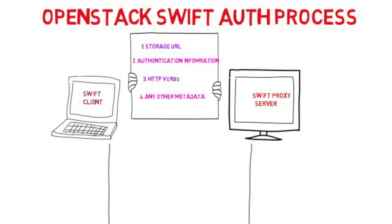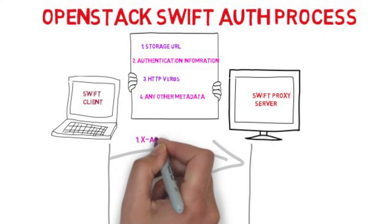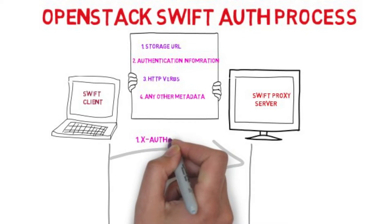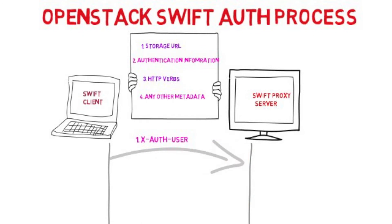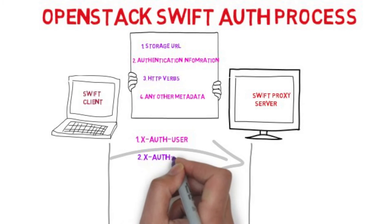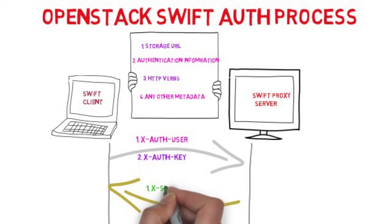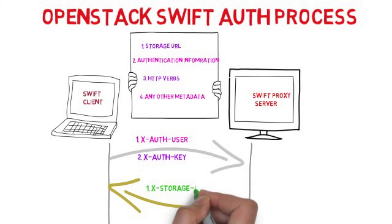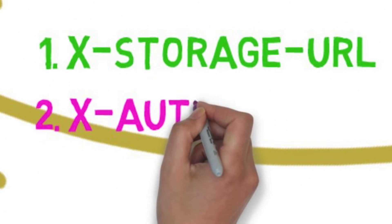To begin with, the client will send its auth details in the HTTP header using x-auth-user and x-auth-key. The Swift server then responds with the x-auth-token and x-auth-storage-URL.